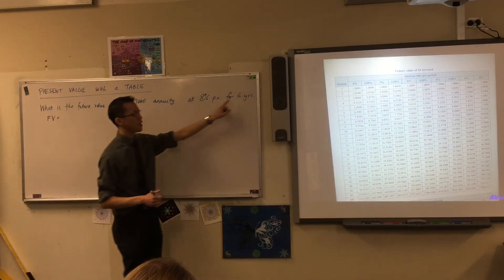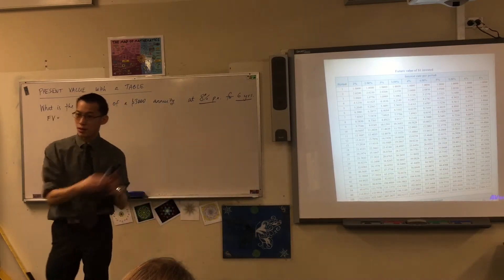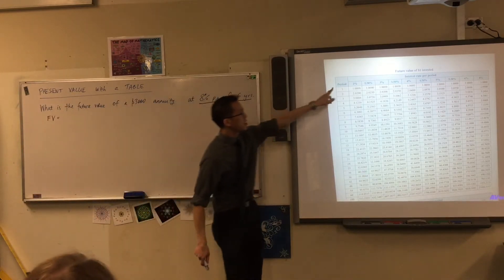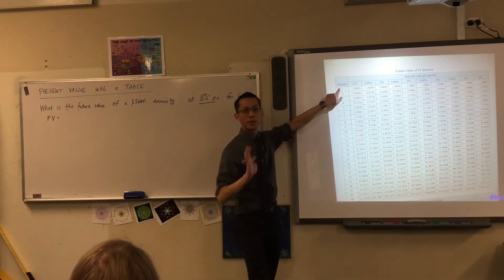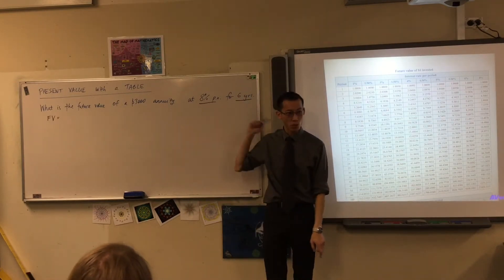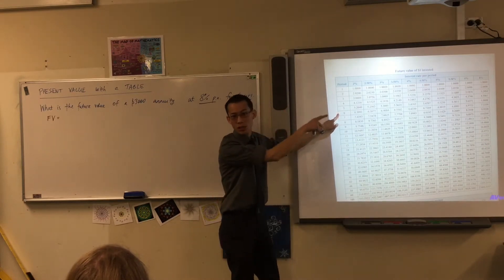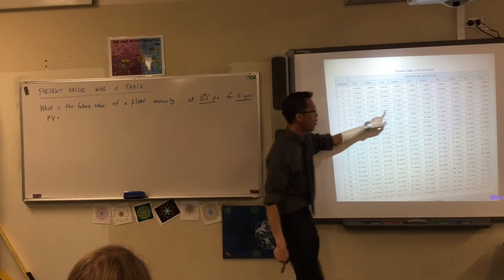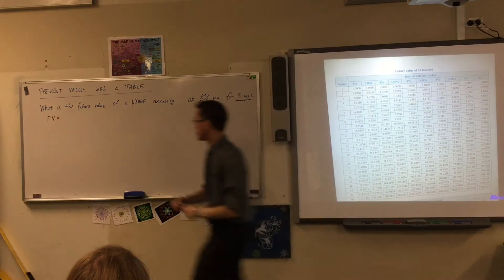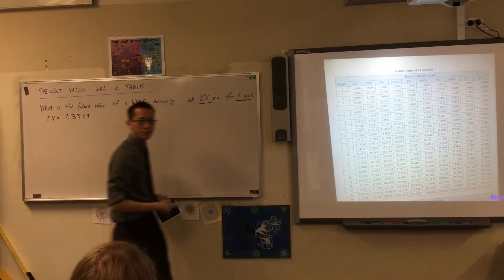$3,000 at 8% for six years. This is telling you if you're going to do this by a table, which row, which column. This says period - remember it could be years, months, quarters, anything you like, but I've kept it nice and simple. Which row am I going to go down to? The sixth row, so here we go. Then 8% is the largest one provided on this table, so you're going to go all the way across and then you land on this number: 7.3359. What do you do with this number?